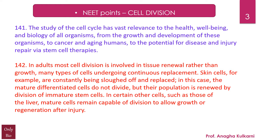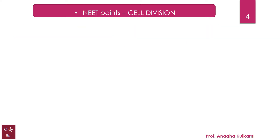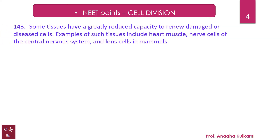Many types of cells undergo continuous replacement. Skin cells, for example, are constantly being shed and replaced. In this case, the mature differentiated cells do not divide, but their population is renewed by division of immature stem cells. In certain other cells, such as those of the liver, mature cells remain capable of division to allow growth or regeneration after injury.